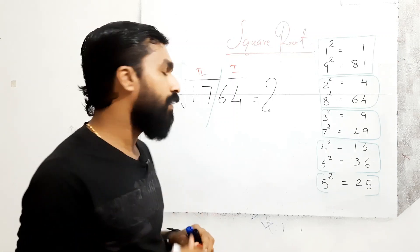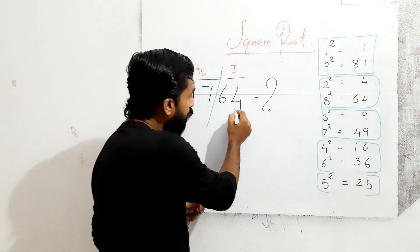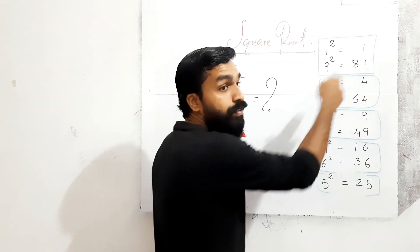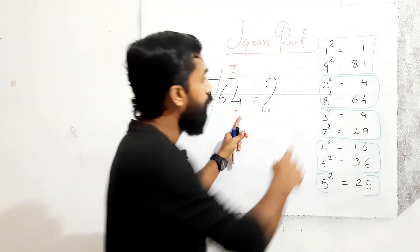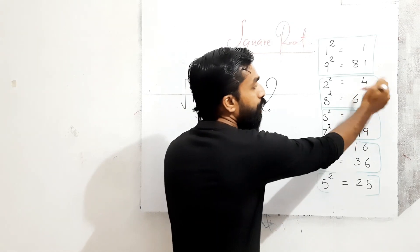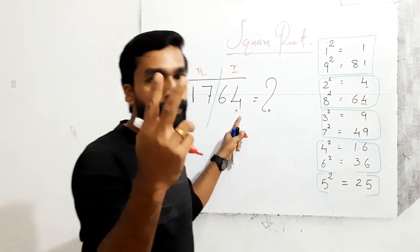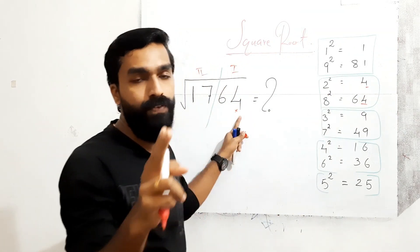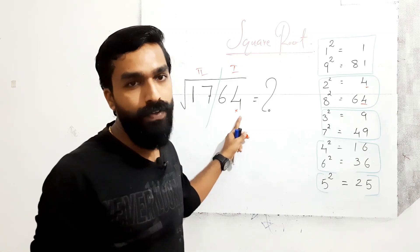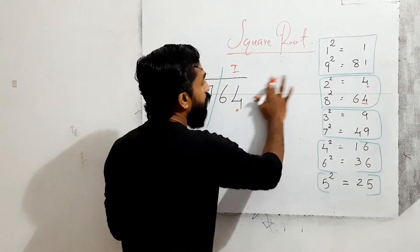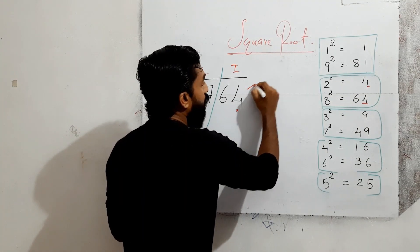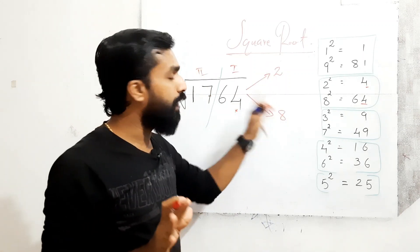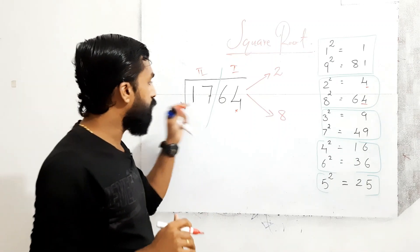Next, the important step: the unit place of 64 is 4. Check in the squares groups where the unit place is 4. 2² = 4, unit place 4; and 8² = 64, unit place 4. So two options are there for getting unit place 4 — that is 2 and 8. Write these two options: 2 and 8.